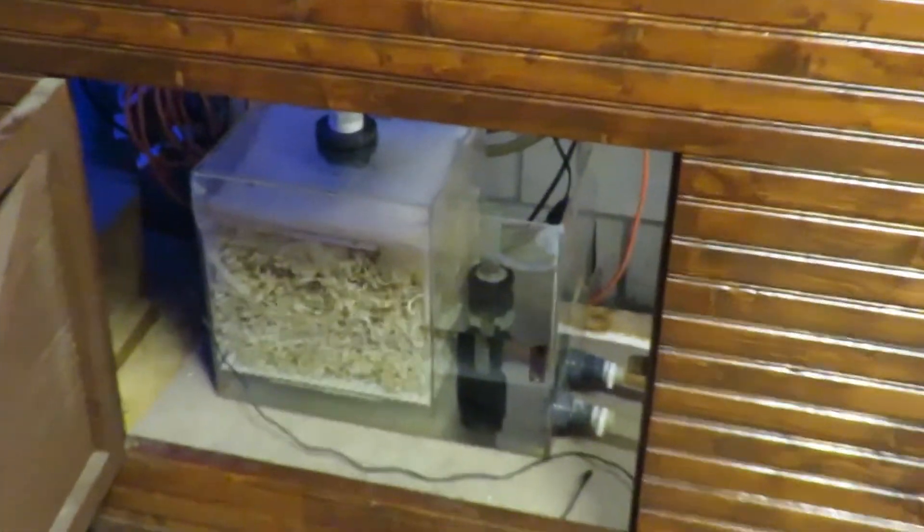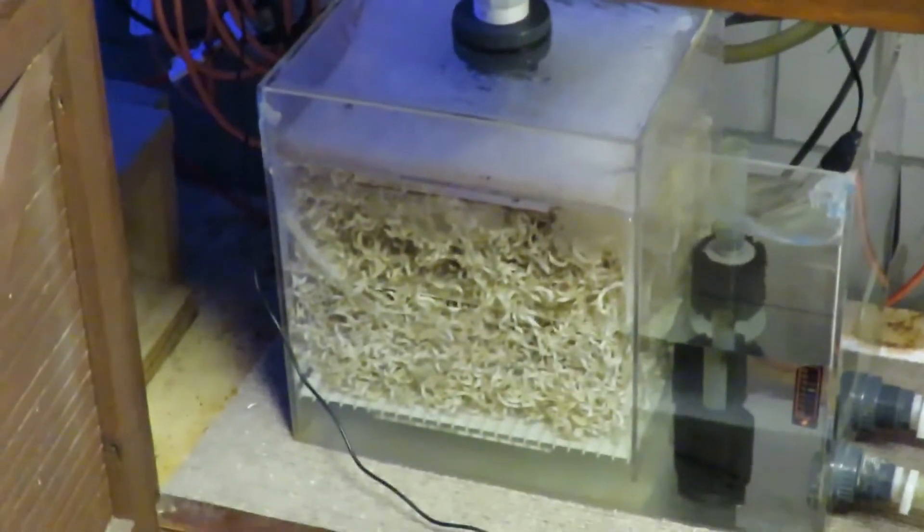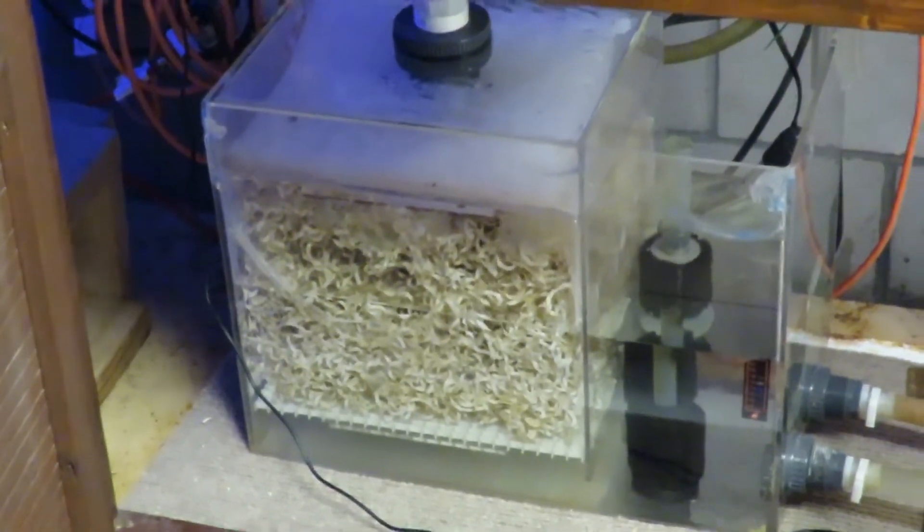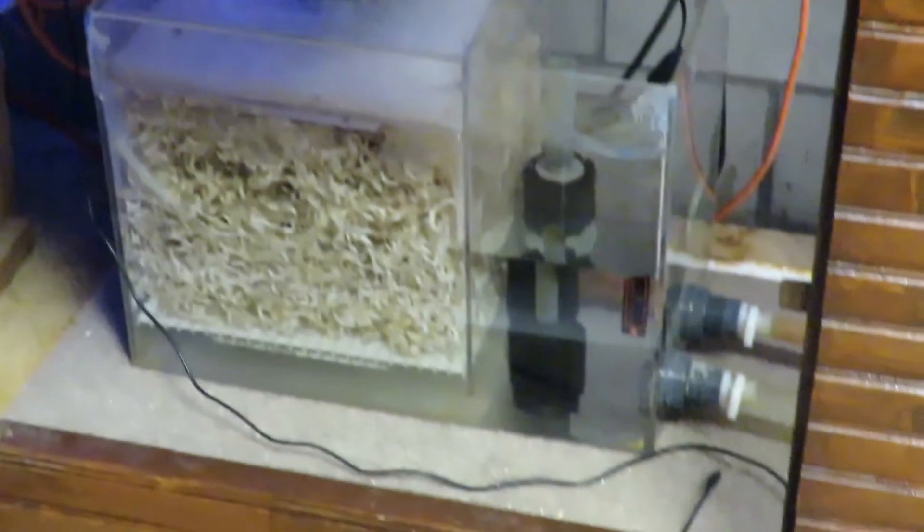If I did lose the nitrifying bacteria in my biomedia because I wasn't adding ammonia or fish waste for the last month and a half, I have taken these sponge filters and put them in there. I don't need to put air on them because I'm moving a lot of water through that system.